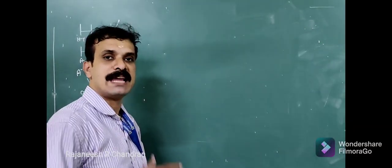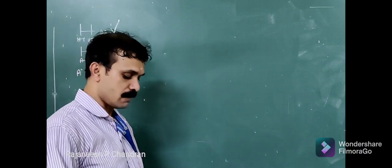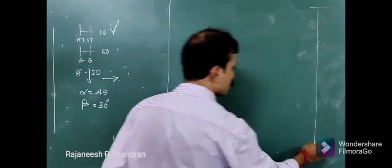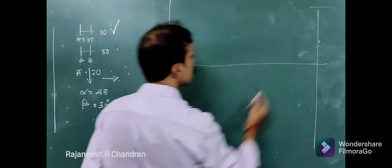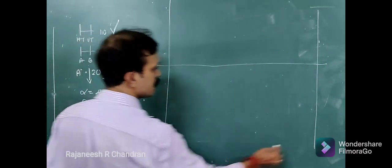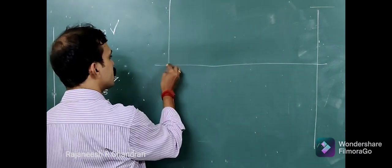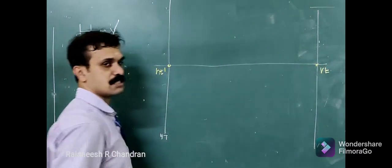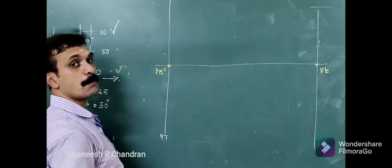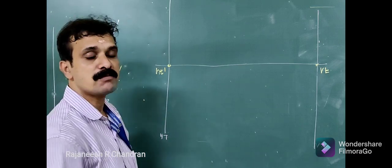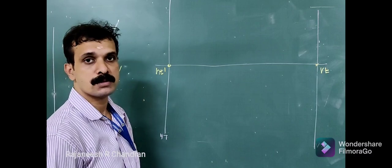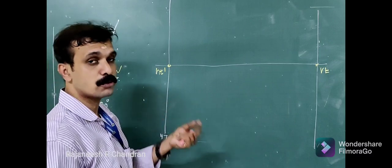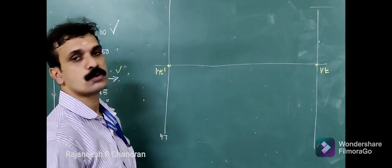From the previous video, we learned that whenever projectors through traces are given, we start from the trace points. We draw a projector here, and at a distance of 110 mm we draw another projector. This is our XY line. The projector through HT gives us HT dash, and the projector through VT gives us VT dash. Now point A is 20 mm below HP, but at this moment we cannot directly use the given projectors.